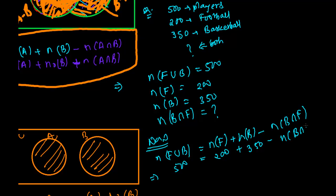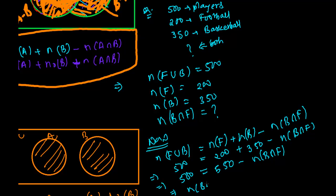Using the formula: n(F∪B) = n(F) + n(B) − n(F∩B), we get 500 = 200 + 350 − n(B∩F), which gives 500 = 550 − n(B∩F). Moving n(B∩F) to the left-hand side: n(B∩F) = 550 − 500 = 50.